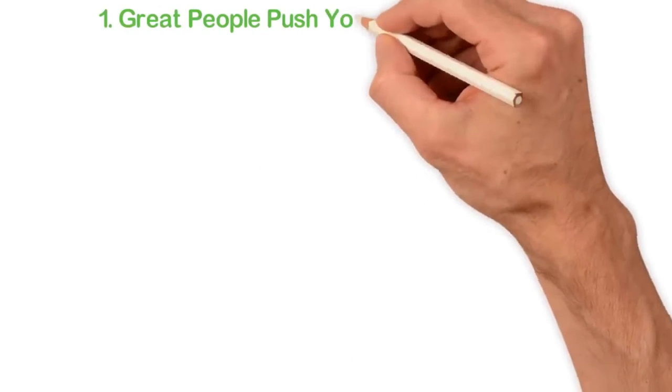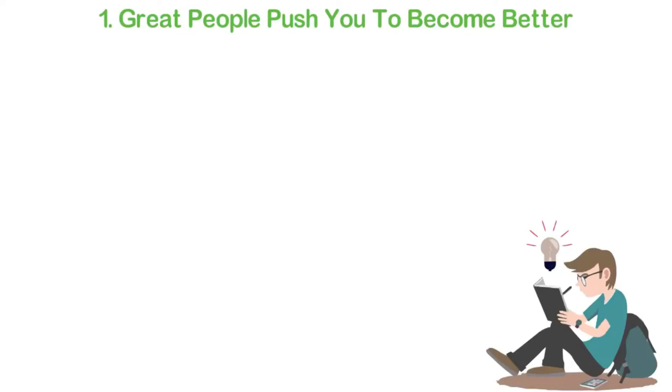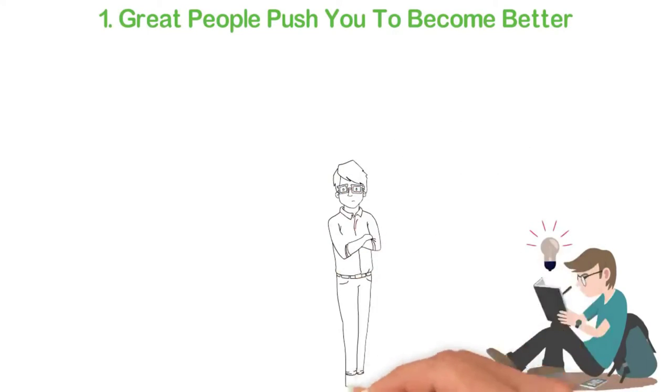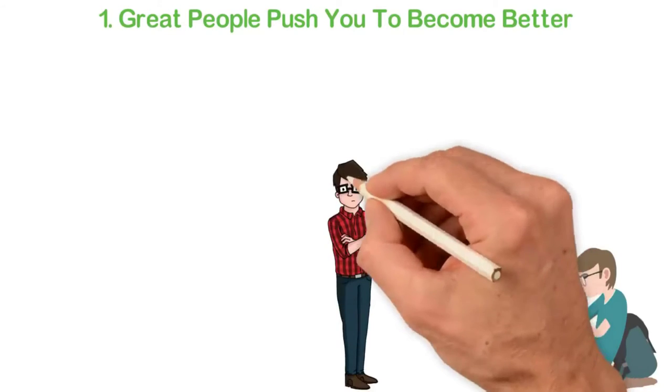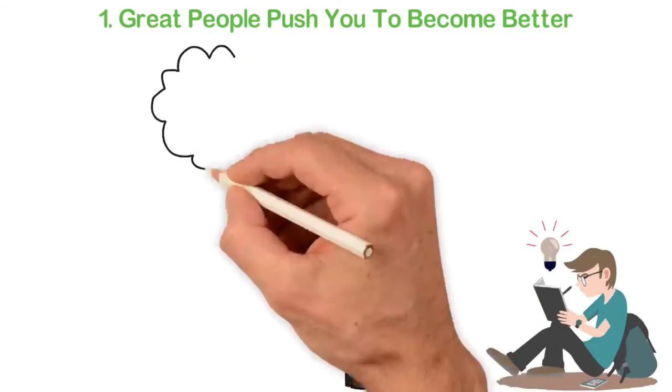Number one: Great people push you to become better. We are not independent people as we love to think. Instead, we are total sum of the people we meet every day. For example, a friend once told me that he wanted to read 100 books in about 4 months. I did not sleep that night. Why? Because there's something in us that wants to be like people around us. If you like, you can call it a chameleon effect but the truth is, deep inside you, you are imitating everyone you hang around.